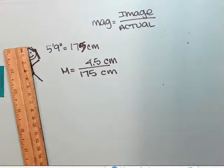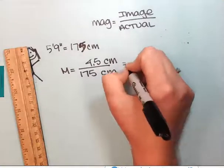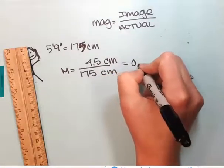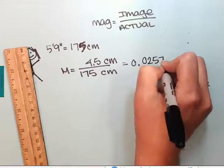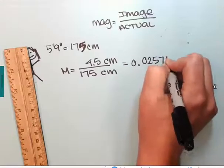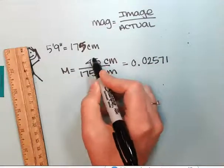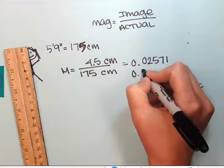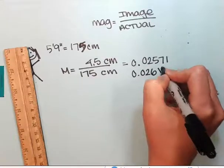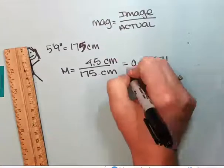Now I am going to plug that in, so 4.5 divided by 175, and that's going to give me a magnification of 0.02571.